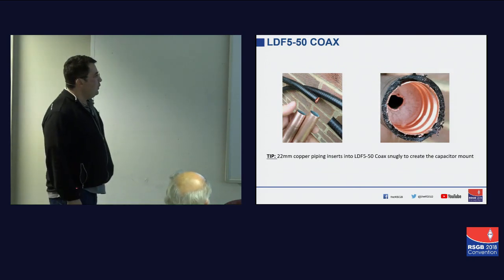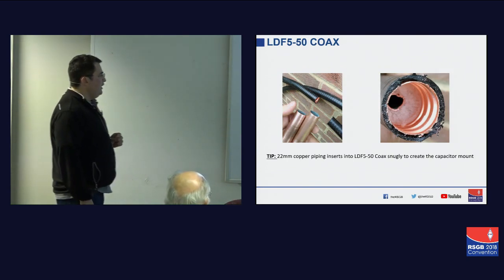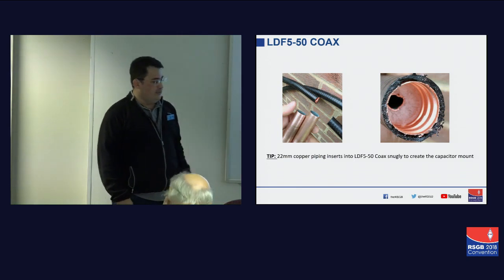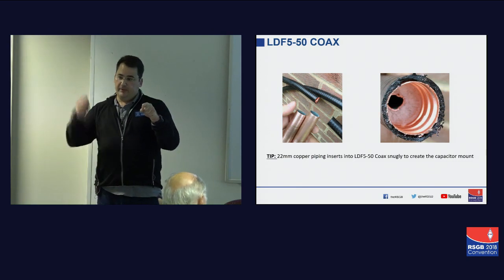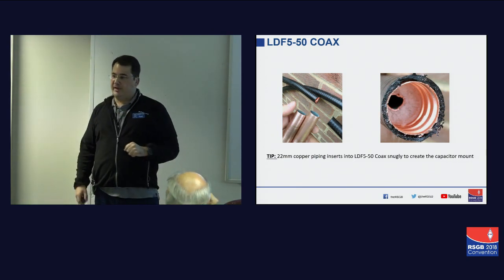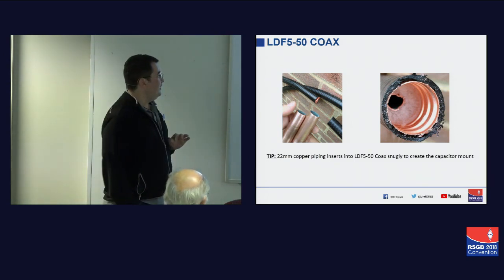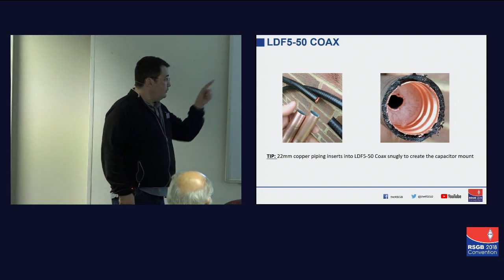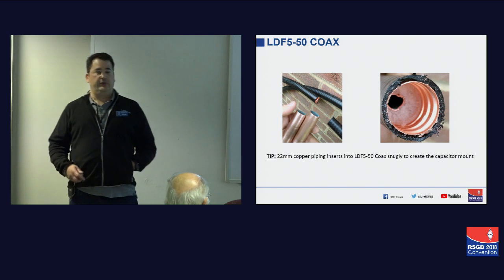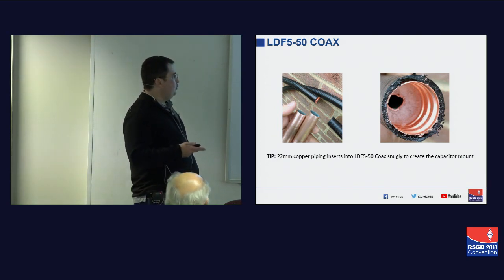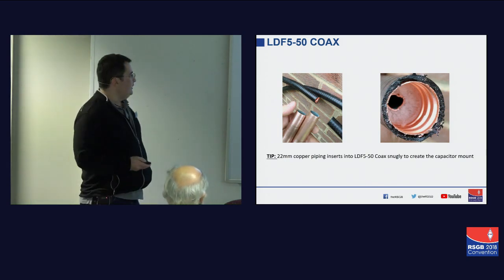We talked about using LDF550 coax. The reason I like LDF550 coax is you can take it very carefully, draw the center out, take 22mm copper pipe, insert it snugly, and use that as your capacitor mounting point. That is a great tip — I recommend any of you looking to build a loop to use LDF550. It's relatively cheaply available on eBay — off cuts reasonably inexpensively.